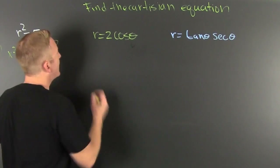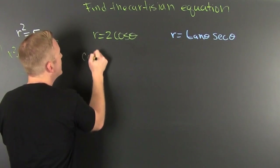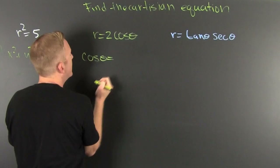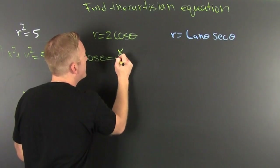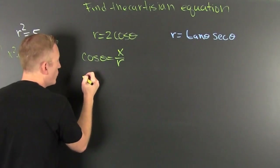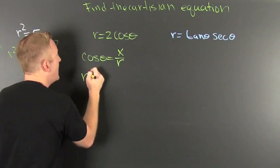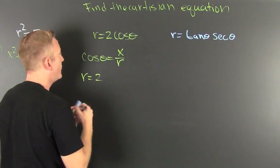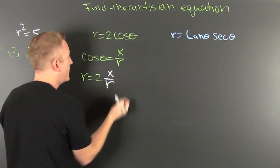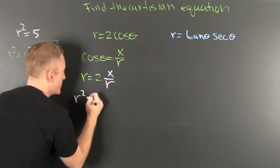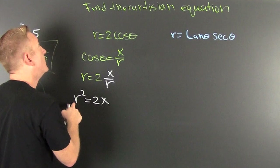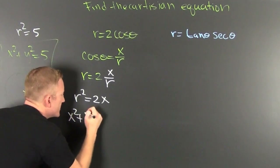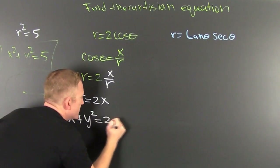I'm going to convert that cosine. The cosine of theta is adjacent over hypotenuse, that's x over r. So I'm going to replace cosθ with x/r. I have r = 2·(x/r). Clear those r's and r² = 2x. And r² = x² + y², so x² + y² = 2x.